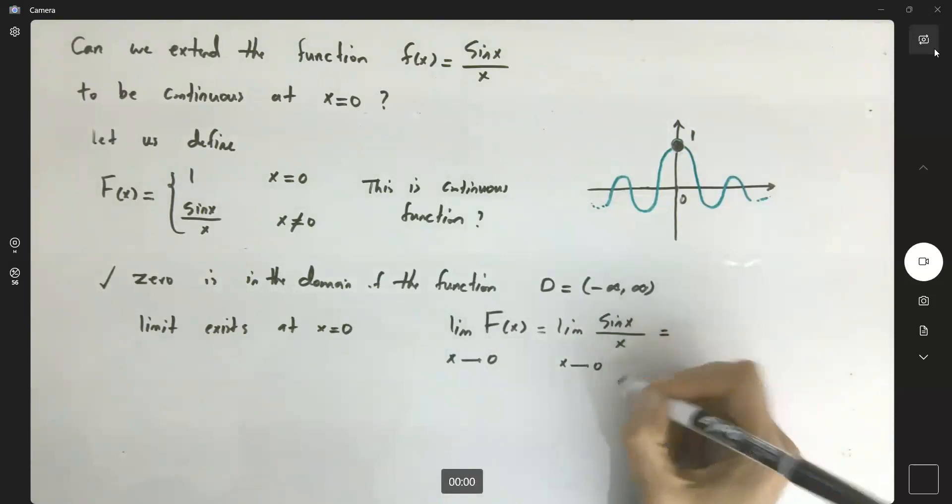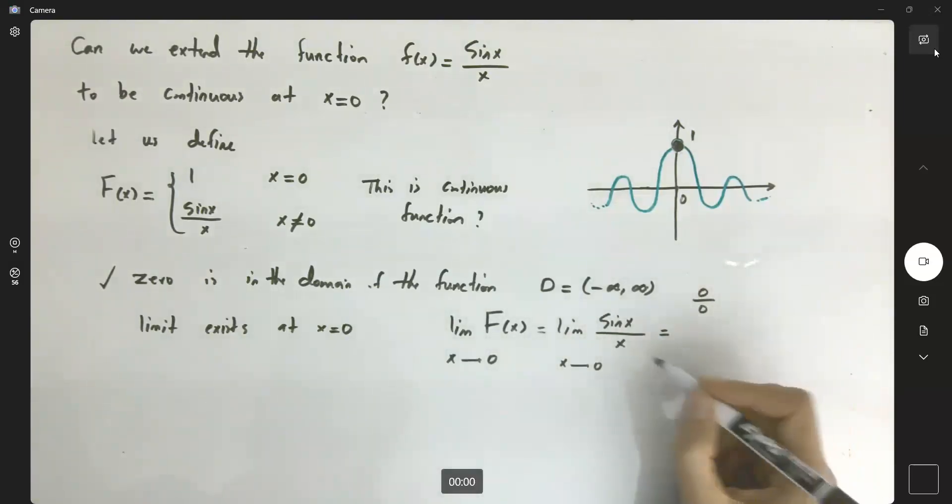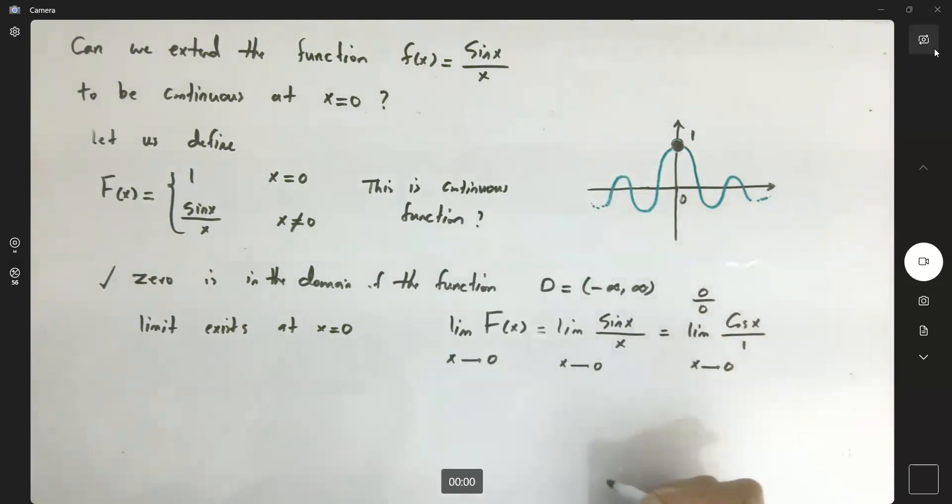If you plug in 0, it's 0/0, so we can apply L'Hôpital's rule. We get the limit of cos(x)/1 as x approaches 0, or just cos(0), which is 1.